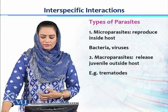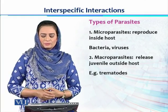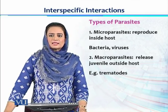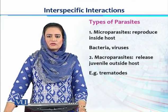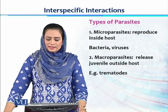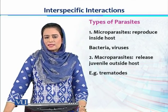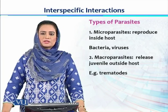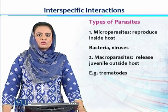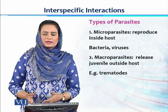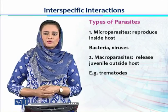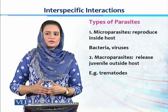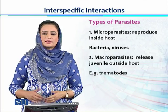There are certain types of parasites. One is called micro-parasites, which reproduce inside the host — for example, bacteria and viruses that cause different types of diseases by feeding on body tissues, mostly blood or different cells. The other group, called macro-parasites, release their juveniles from the host — for example, trematodes or tapeworms — and these can find other hosts, spreading the infection.